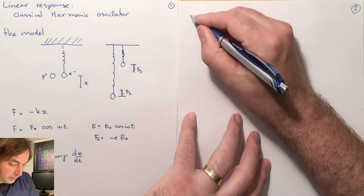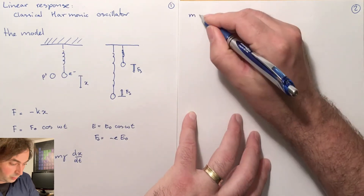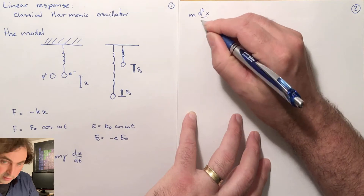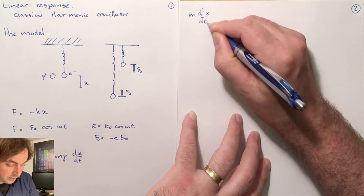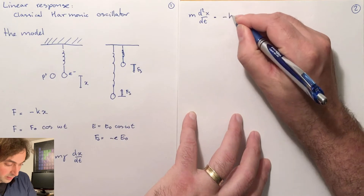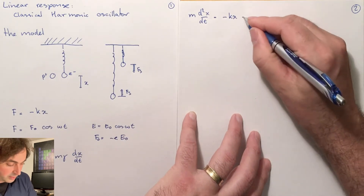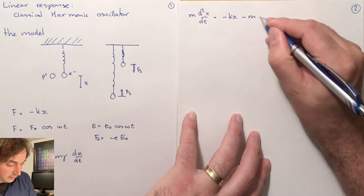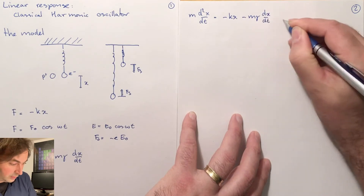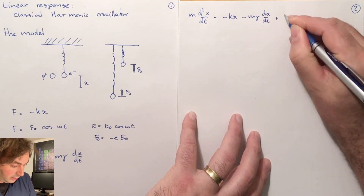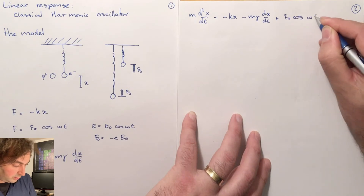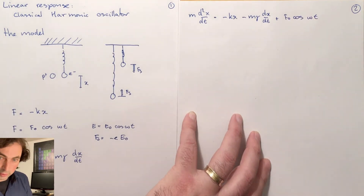The equation of motion is Newton's equation: F equals mass times acceleration. So m times the acceleration, and now we put all the forces on the other side — the friction and the external driving force f zero cosine omega t.